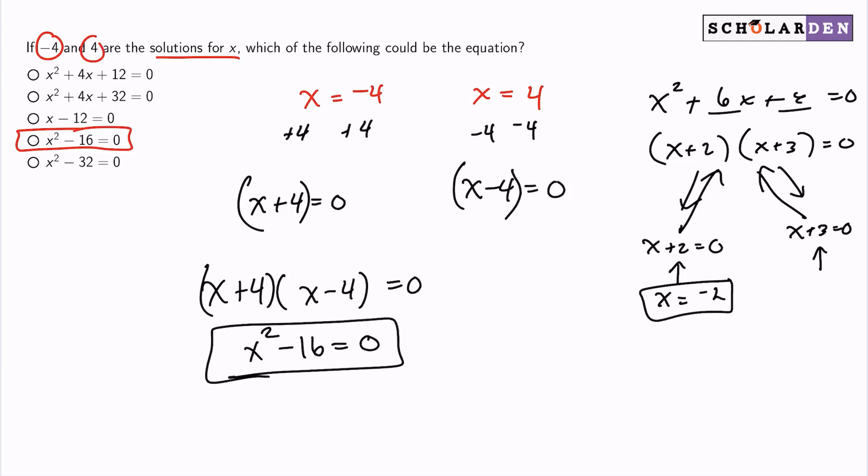And so with that understanding, the advanced way is just to realize instantly that this is a difference of squares. The less advanced way would be to go ahead and just work backwards to figure out what the equation is.